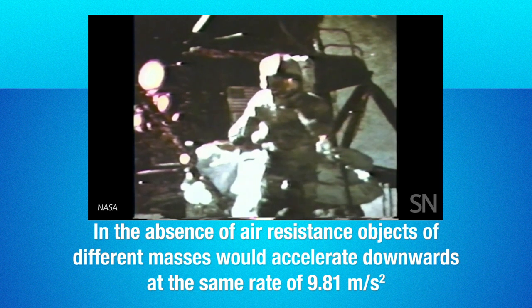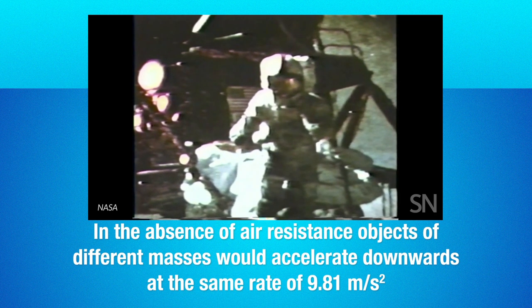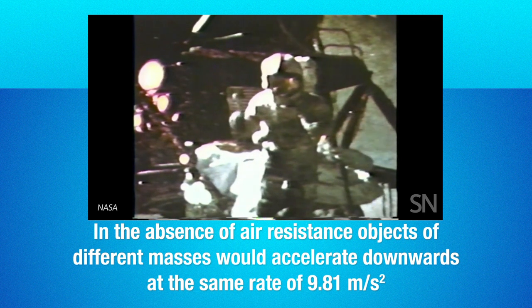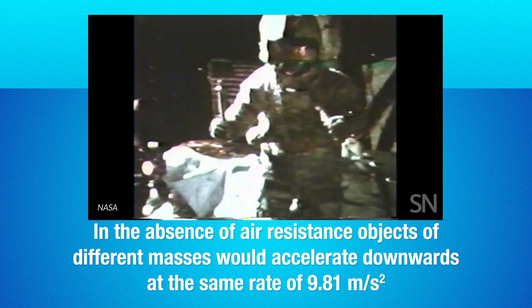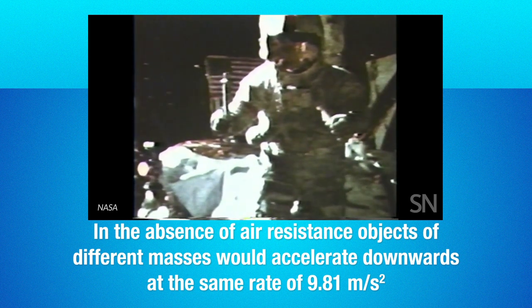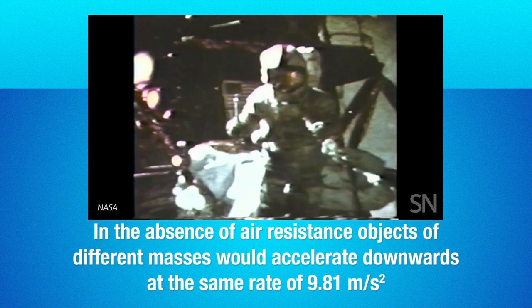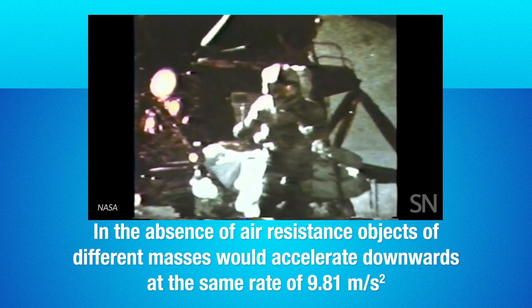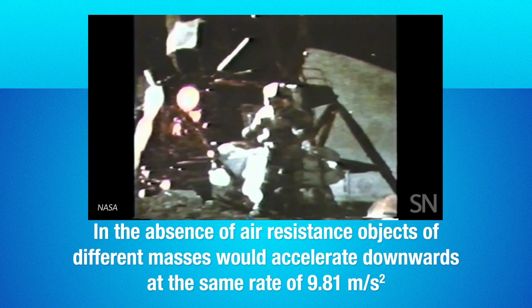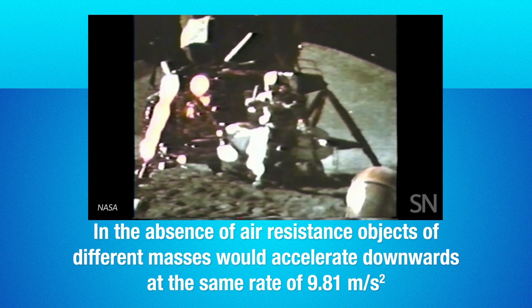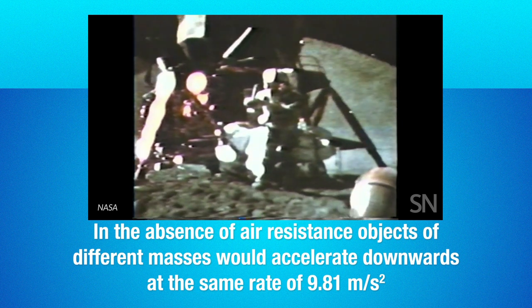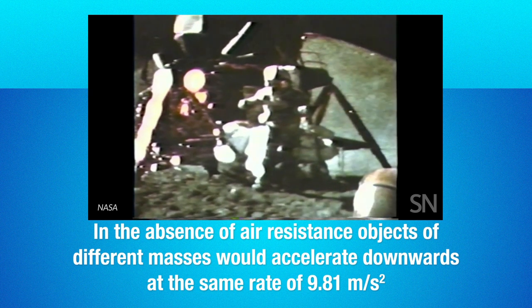But why is it that these objects with different masses are accelerating at the same rate? An object with a mass of 10 kg will be pulled downwards by gravity with a force of 98.1 newtons, while the object with a mass of 1 kg will be pulled downwards with a force of 9.81 newtons. And this is because both numbers, the force and mass, are directly proportional to each other. And the constant between them is the acceleration due to gravity, which will always be 9.81 meters per second square, at least for objects in freefall on Earth.